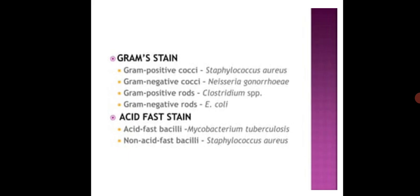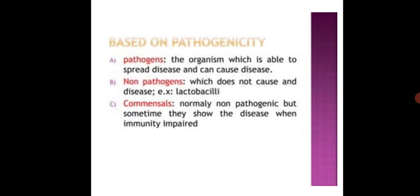Gram positive cocci: For example, Staphylococcus aureus. Gram negative cocci: Neisseria gonorrhoeae. Gram positive rods: Clostridium species. Gram negative rod: E. coli. Acid-fast stain: Acid-fast bacillus, Mycobacterium tuberculosis. Non-acid fast bacillus: Staphylococcus aureus.